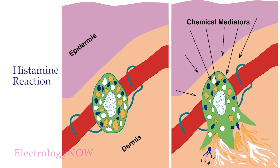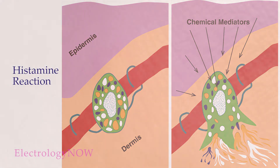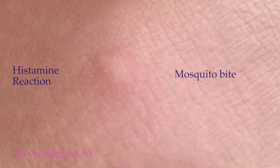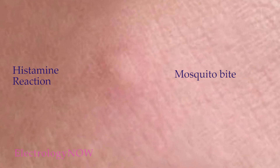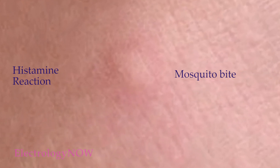Histamine is one of the main chemicals released by the mast cells. We're all familiar with the histamine reaction and usually think it's a bad thing. But were it not for this substance, your skin would not heal. When a mosquito bites you, it's not some venom from the insect that causes the bump — it's your body's own histamine reaction. Of course, there are unwanted histamine reactions, such as hives from an allergy, but these reactions can be alleviated with medication.